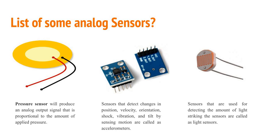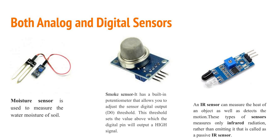Each sensor has different uses and applications and different qualities. Some sensors are digital, some are analog, and some sensors can work with both digital and analog values. It depends on what you want to use that sensor for. For example, sensors like moisture sensor, smoke sensor, and IR sensor can be used as both analog and digital.